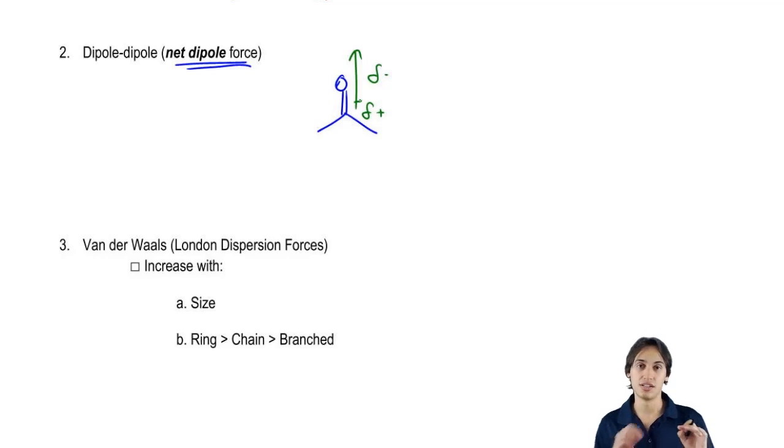Remember that we use the lower case delta to represent partial. And it means that I don't know exactly what the number is, I just know that it's more than the other. Well, check out what can happen. When I have a net dipole, another acetone molecule can arrange itself so that the partial negative from one of the molecules orients with the partial positive of the other.